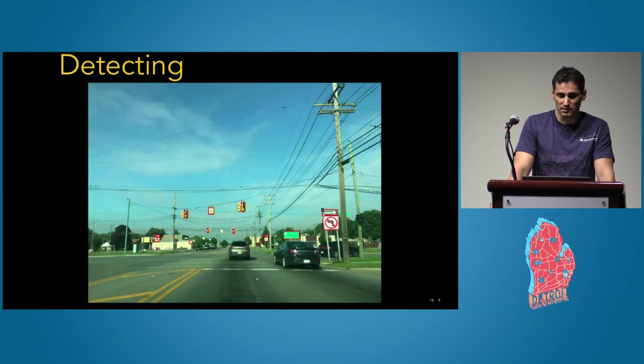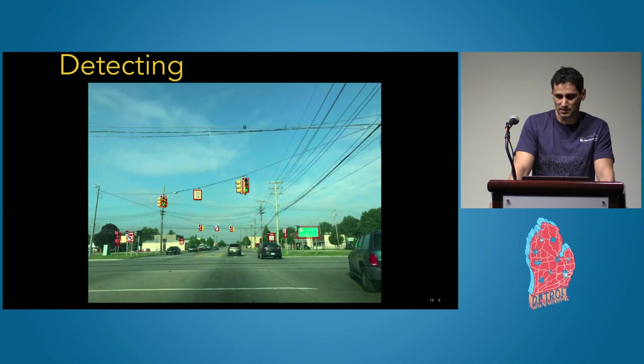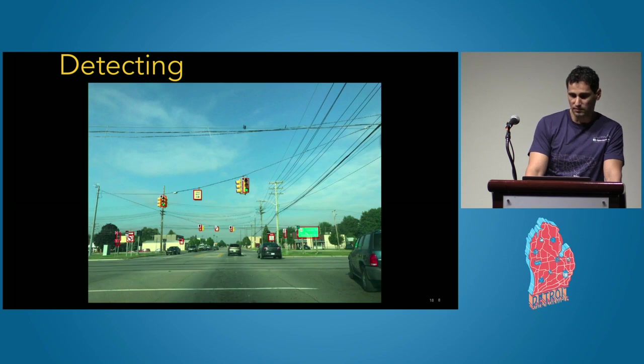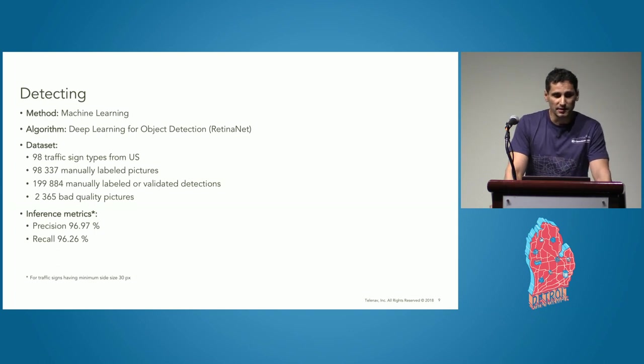In total, almost 104 different types of traffic signs. It's important to note that often the same traffic sign is detected on several successive pictures of the same trip from different positions of the car.